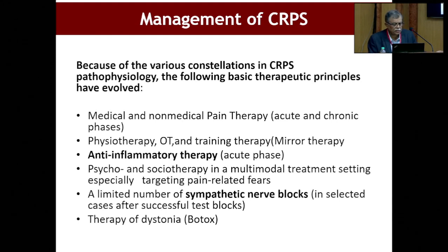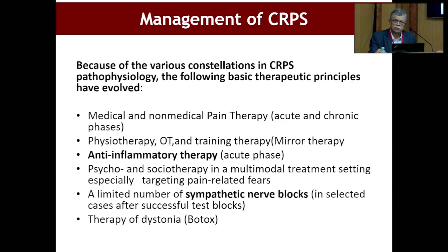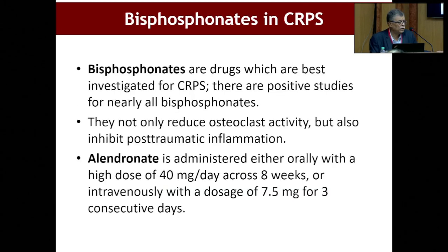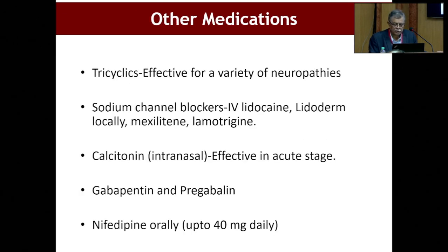We have various therapies starting from medical therapies like vasodilators and physiotherapy. In the acute phase you can even use steroids like methylprednisolone succinate infusions, which can really help. Sympathetic nerve blocks like stellate ganglion or lumbar sympathetic blocks can also help. Pharmacological treatments generally include steroids, bisphosphonates, calcitonin, vasodilators like nifedipine, and gabapentinoids because there is an element of central sensitization. We have also got good results with intravenous long-term ketamine infusion. Bisphosphonates are very good — as there is localized osteoporosis, start the patient on bisphosphonates either oral or parenteral immediately upon diagnosis and they work wonders. Tricyclic antidepressants, IV lidocaine, calcitonin, gabapentin, and nifedipine orally are also used.